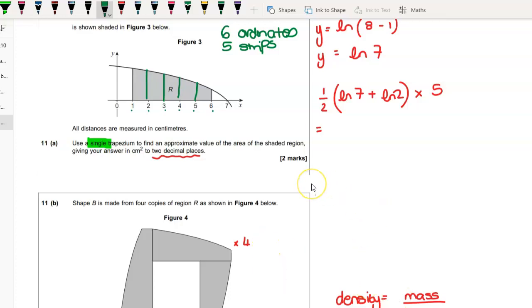You need the distance between your ordinates, which is h. You need your y zero, which is natural log of seven as we found before, and your y five, which is the natural log of two. And then in your calculator you need to find y1, y2, y3, and y4.